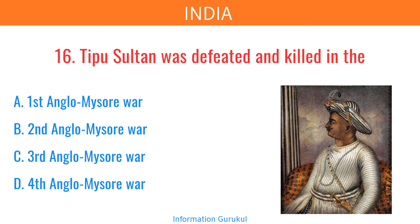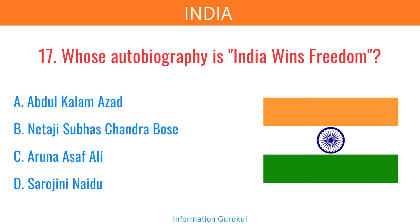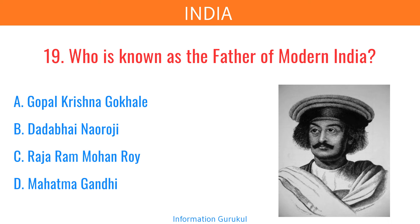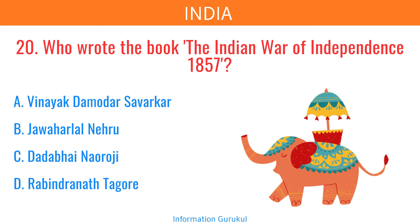Tipu Sultan was defeated and killed in the Fourth Anglo-Mysore War. Whose autobiography is India Wins Freedom? Abdul Kalam Azad. British ruled India for nearly approximately 200 years. Who is known as the father of modern India? Raja Ram Mohan Roy. Who wrote the book The Indian War of Independence 1857? Vinayak Damodar Savarkar.